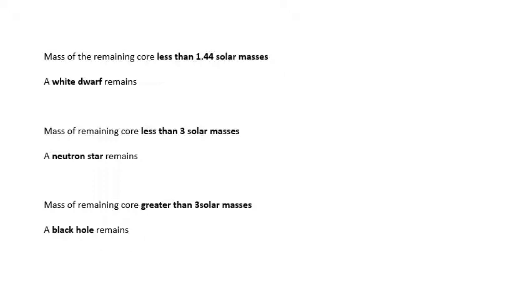If the mass of the remaining core is less than 1.44 solar masses, then we get a white dwarf. Our sun, when it finishes off, it's not going to go supernova. It'll take a bit longer to fade away, but our sun will end up as a white dwarf. If the mass of the remaining core is less than three solar masses—so bigger than 1.44, less than three—then we get a neutron star. If the mass of the remaining core is greater than three solar masses, then we get a black hole.